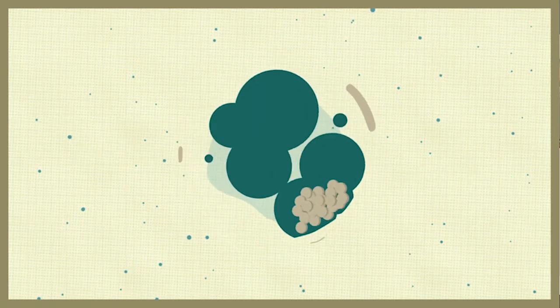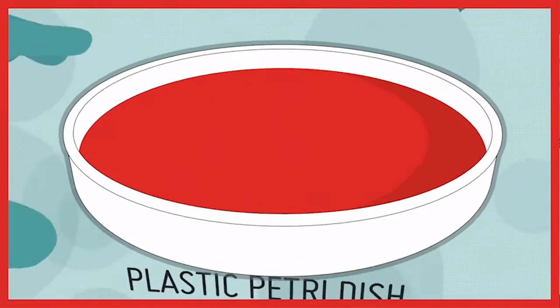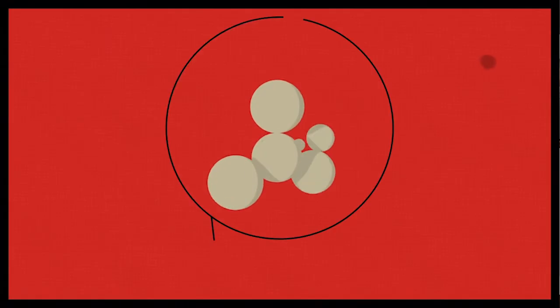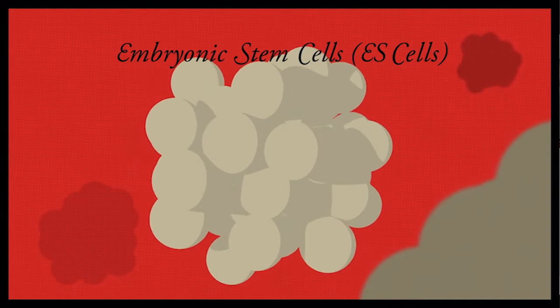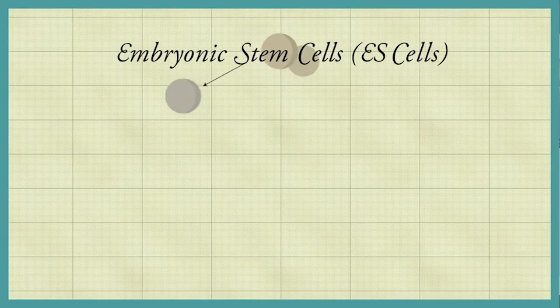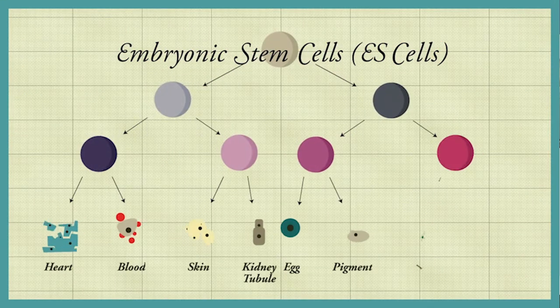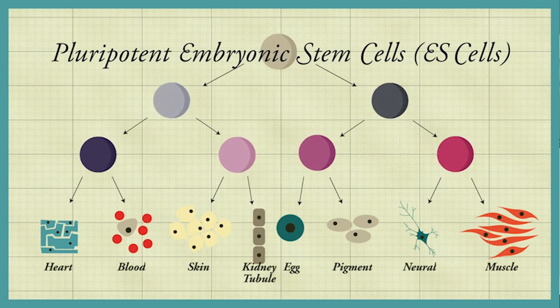If the cells of the inner cell mass are isolated, they can grow indefinitely in a plastic dish and maintain this undifferentiated state. These cells are known as embryonic stem cells, or ES cells. Like cells in the developing embryo, ES cells retain the ability to form any type of cell in the adult body. Thus ES cells are said to be pluripotent.